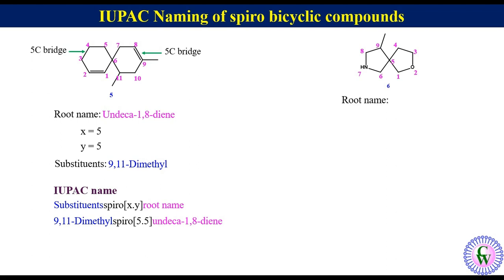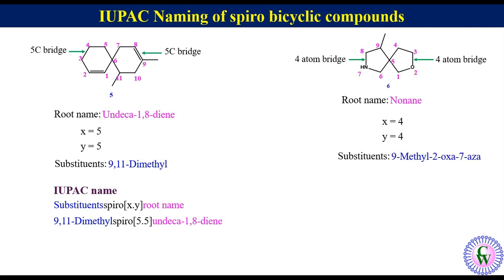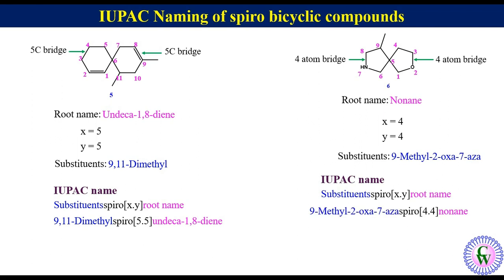Root name: there are 9 atoms in the ring; heteroatoms are counted as carbons for the root name, so the root name will be nonane. There are two 4-atom bridges, so x = 4 and y = 4. Substituents: there is a methyl at C9, an oxygen at position 2, and a nitrogen at position 7, written as 9-methyl-2-oxa-7-aza. IUPAC name: 9-methyl-2-oxa-7-aza-spiro[4.4]nonane.